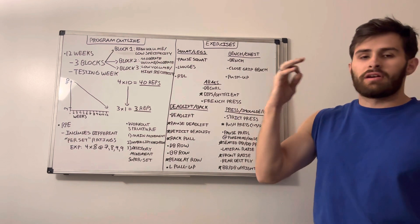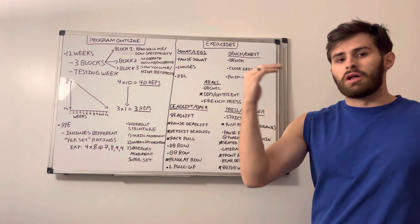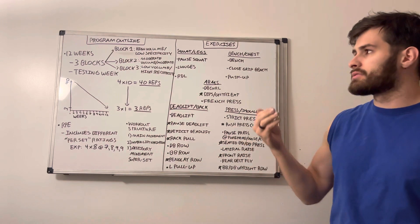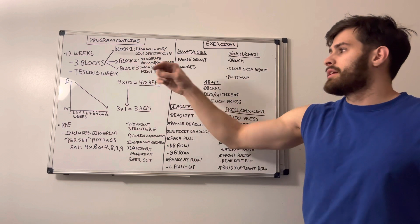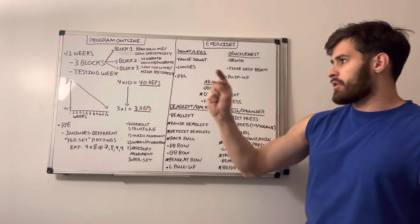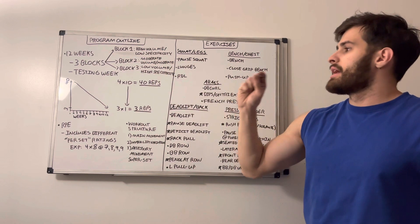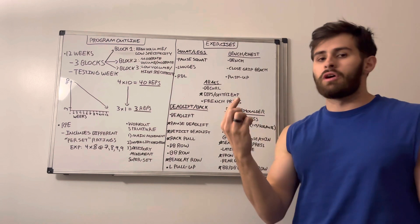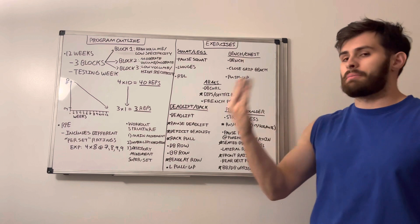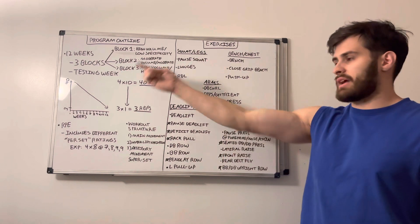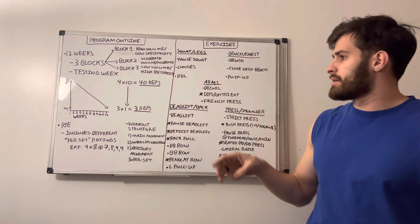So it's going to be not very specific to maximal loads. So it's going to be lighter weights, higher reps, higher volume in this case. Block two is going to be somewhere in the middle for both volume and specificity. And block three is going to be the lowest volume, but the highest specificity. So the weights are going to be heaviest and we're going to be prepping, gearing up to test out our main lifts.